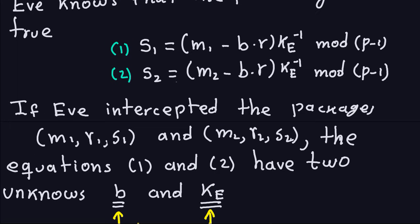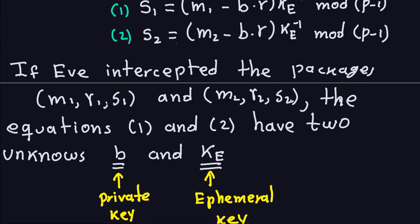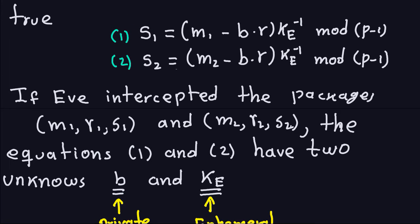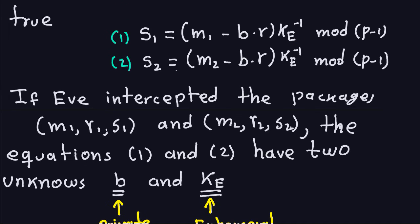To solve the system, Eve subtracts equation 2 from equation 1. The term B·R·k⁻¹ cancels out, giving: S1 − S2 ≡ (M1 − M2)·k⁻¹ mod (P−1). This can be verified by simple algebra. The only unknown remaining in this expression is the ephemeral key k, since M1, M2, S1, S2 are all from the intercepted packages.